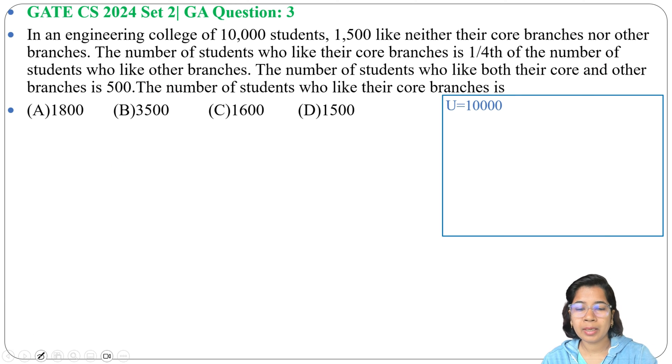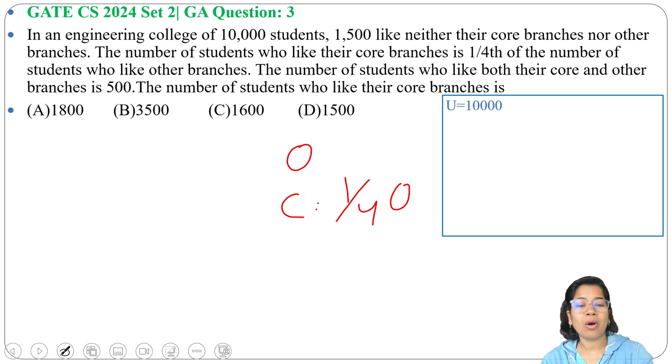You can represent it two ways: if we take O as one set, then C will be 1/4th of O, or if we take C as one set, then O will be 4 times C. In both ways, C is 1/4th of O.